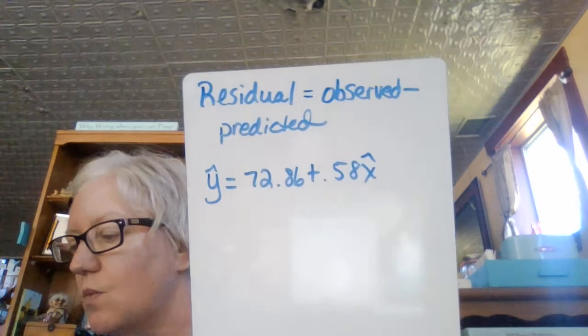Let me explain with an example. Here's the equation: y-hat equals 72.86 plus 0.58x-hat. Remember, y-hat and x-hat are the predicted values, where y is the weight and x is the age.